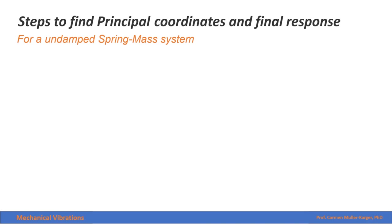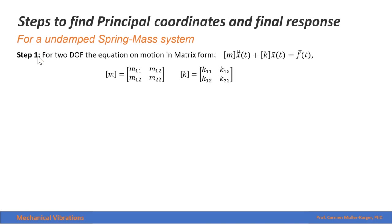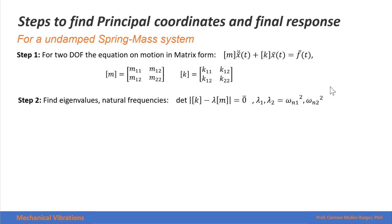The steps to find the principal coordinates and final response for an undamped spring-mass system are as follows. Step one is finding the equation of motion in our set of generalized coordinates — in this case we may have inertia coupling and/or static coupling. Step two is finding the eigenvalues or natural frequencies of the system by evaluating this determinant. Lambda will equal the eigenvalues, which are the natural frequencies squared. For a two degrees of freedom system, we have two natural frequencies.